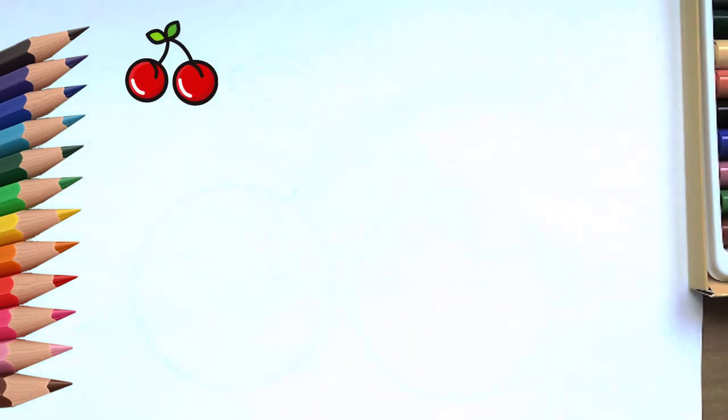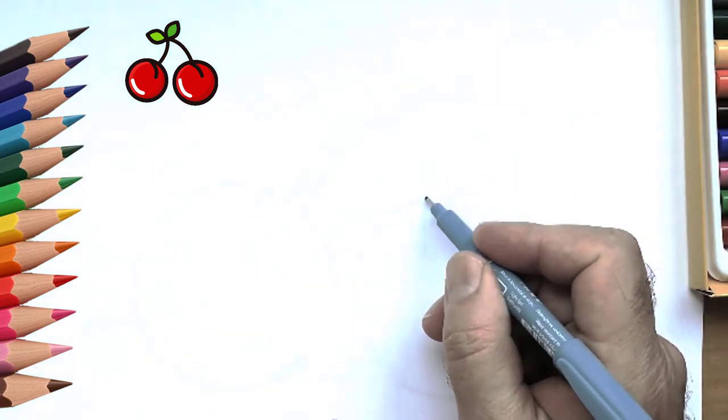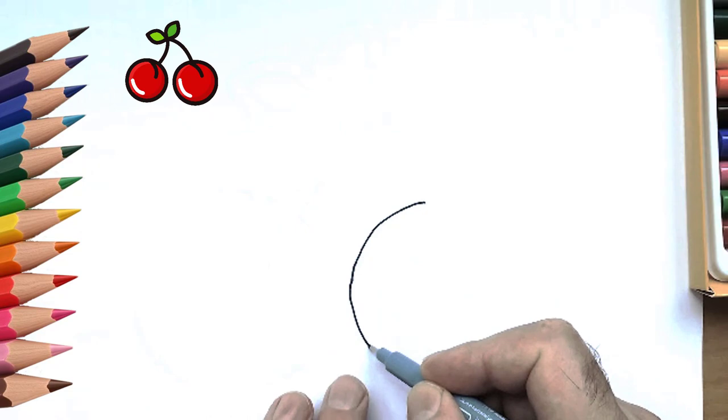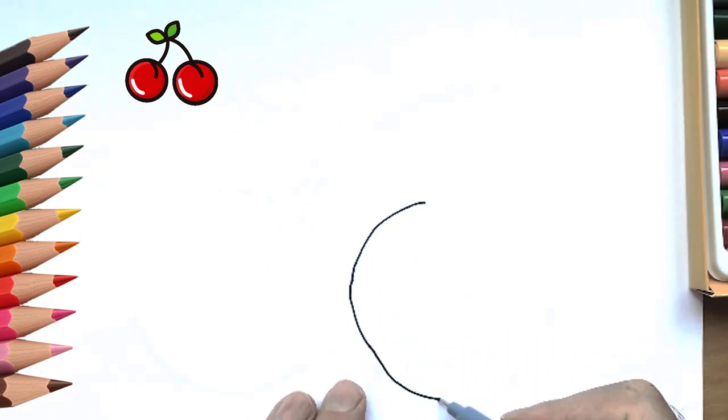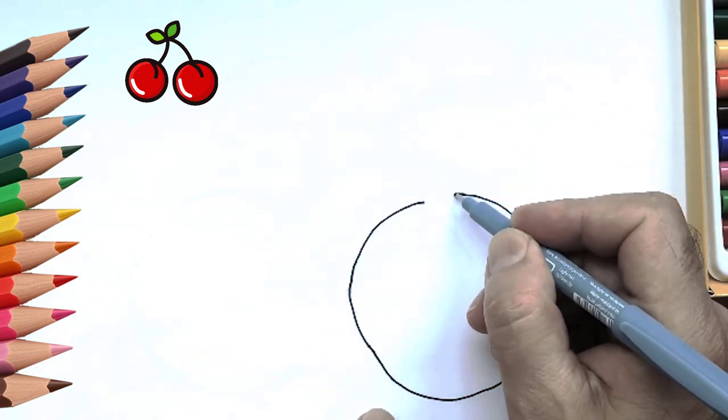How to draw a cherry. It's summer outside with lots of vegetables and fruits. Today we will learn to draw cherries or sour cherries. You will draw what you like best. Draw a large circle. This will be one cherry.